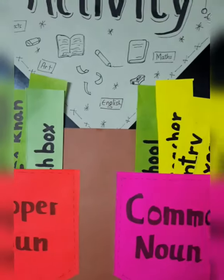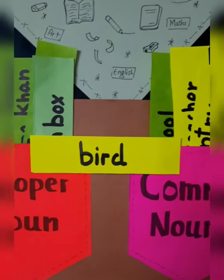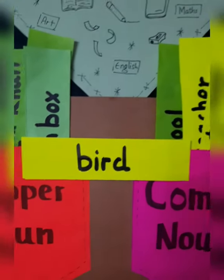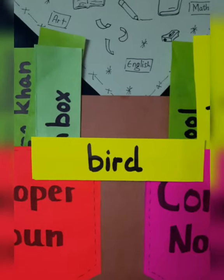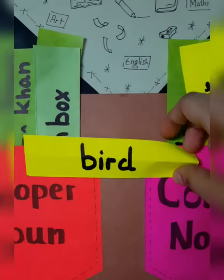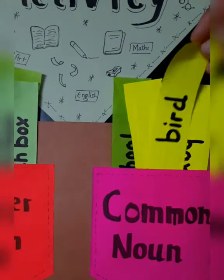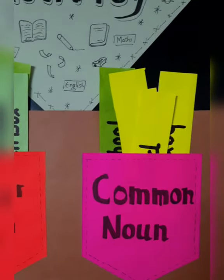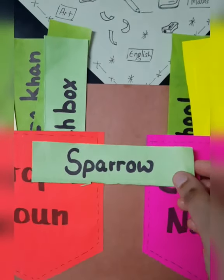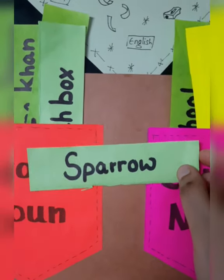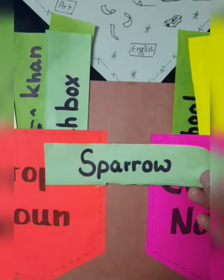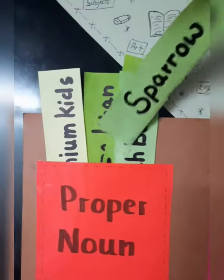Next is 'bird' — B is small, first letter is small. Which bird? There are many birds — sparrow, crow. So it means it's a common noun and we are going to place it here in the pocket of common noun. Next is 'Sparrow' — now I have mentioned the bird's name and that is Sparrow. S is capital, and I have mentioned the bird's name, so it is a proper noun.